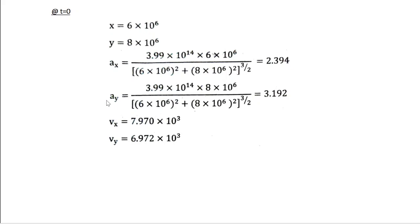Similarly, when you substitute the values, you get Ay = -3.192 m/s². So these are the initial values.